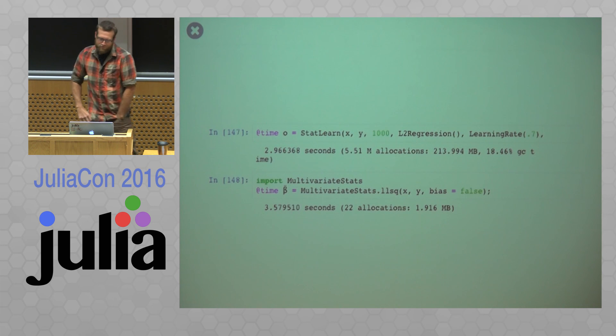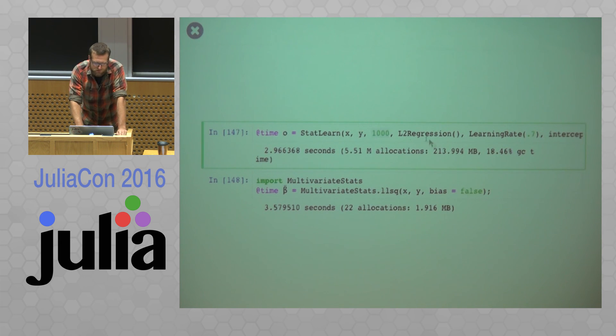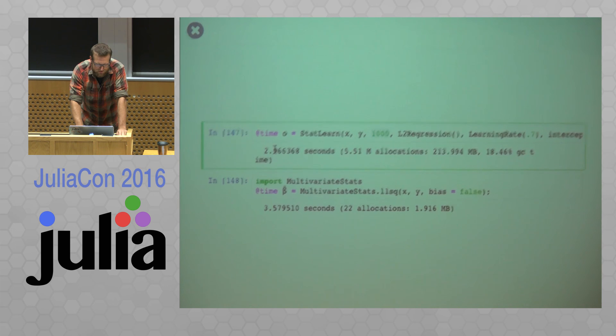Now the very fastest linear regression solver that I've come across is in multivariate stats, the multivariate stats package using the LLSQ function. So if I run through this data using batches of size 1000, and here I'm using linear regression and a learning rate with 0.7, I can run through that in about three seconds. Multivariate stats runs through it in about 3.5.